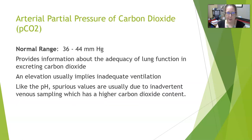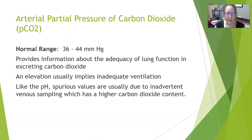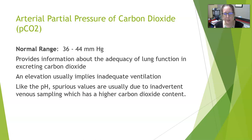The arterial partial pressure of carbon dioxide (pCO2) has a normal range of 36 to 44 mmHg. It provides information about the adequacy of lung function in excreting CO2. An elevation in pCO2 usually implies inadequate ventilation — hypoventilation — while a decreased pCO2 suggests hyperventilation. Spurious values are usually due to venous sampling, as venous blood has a higher CO2 pressure and content than arterial blood.